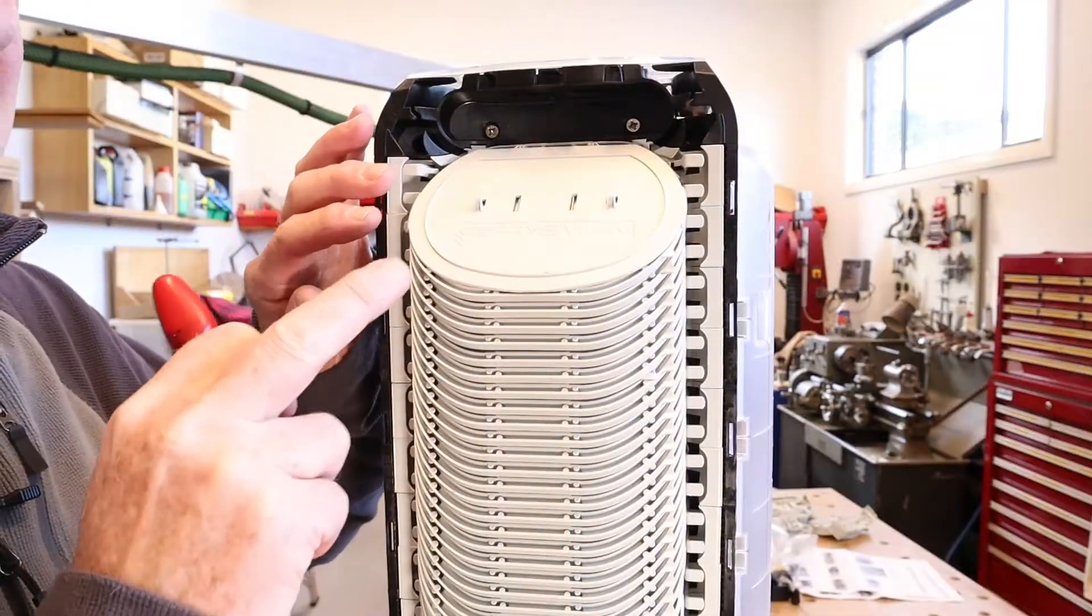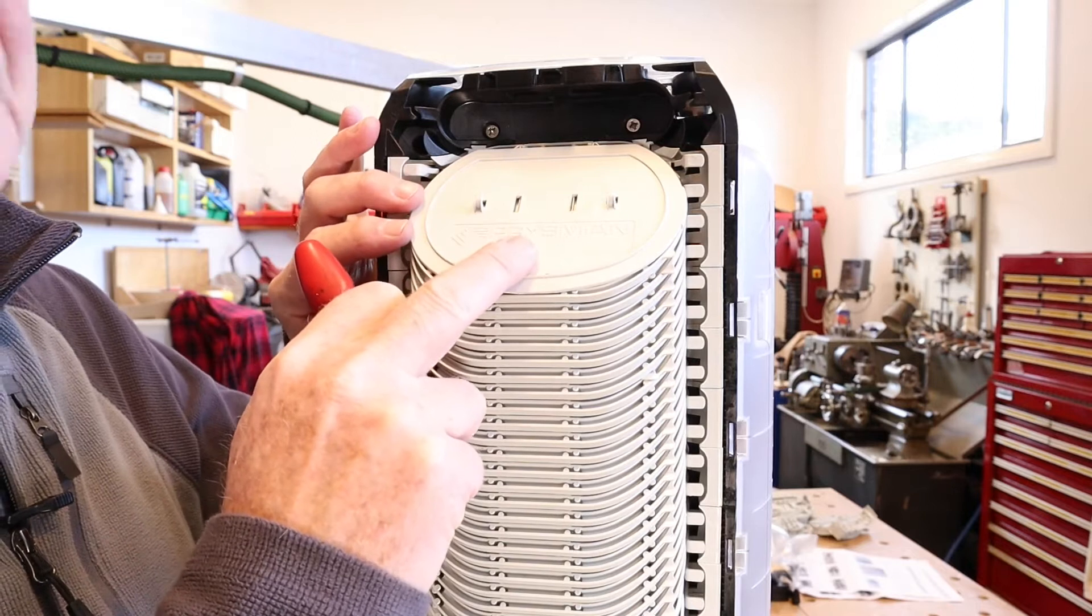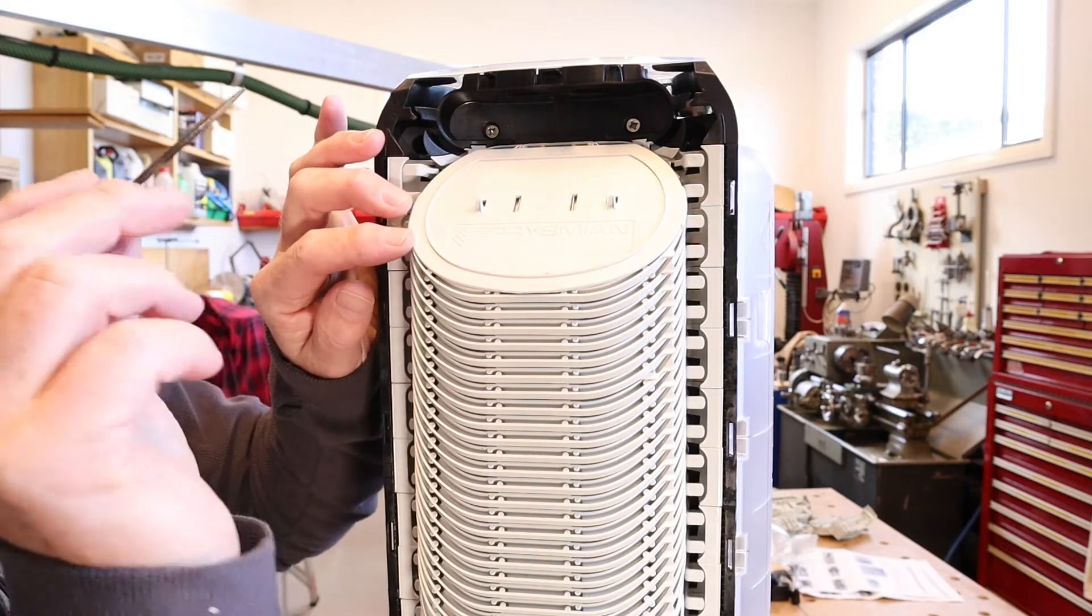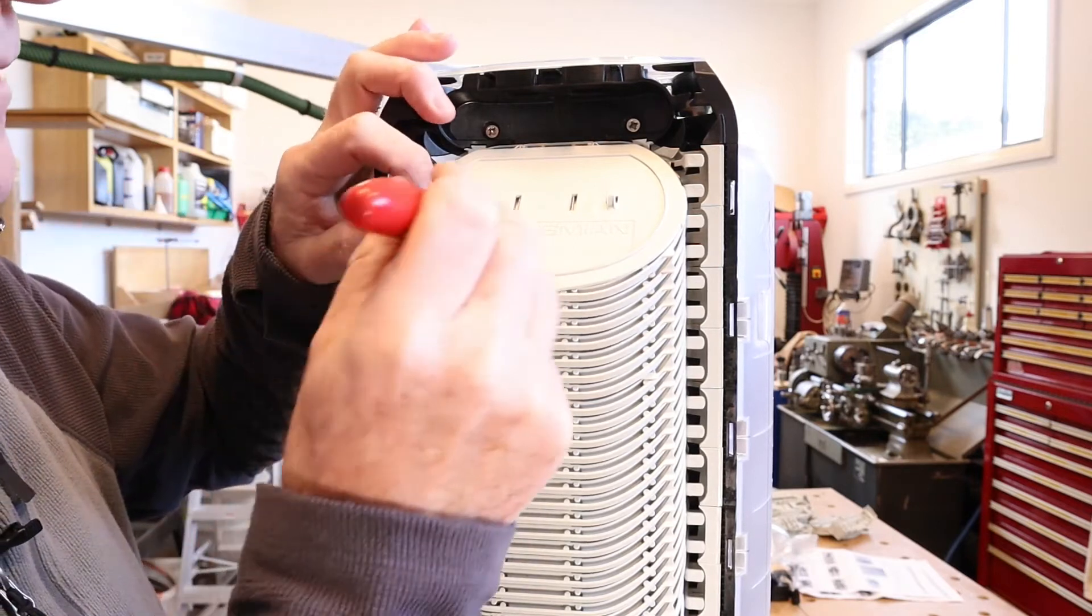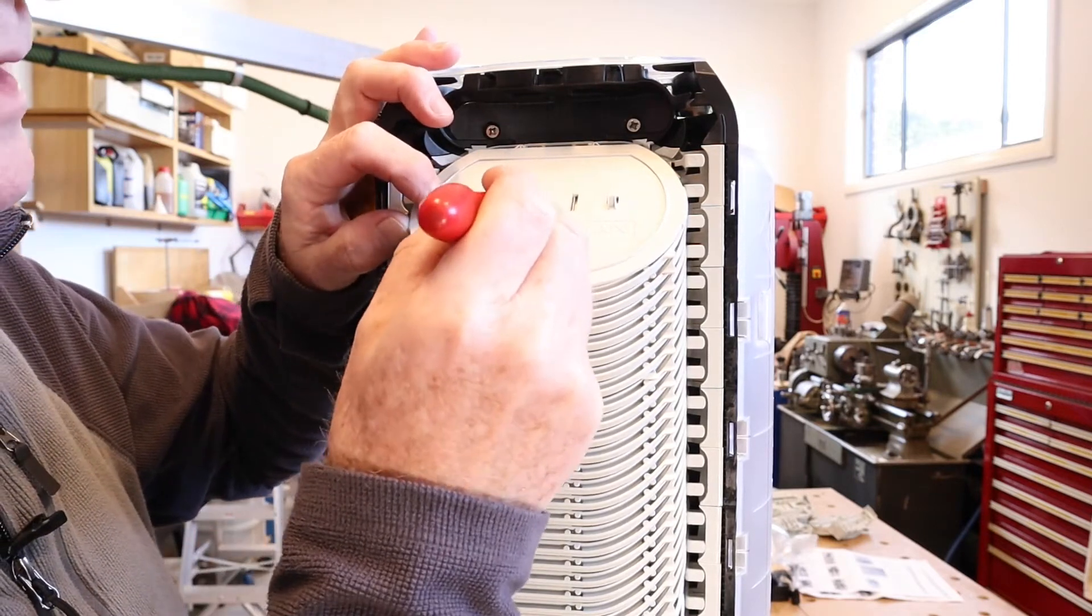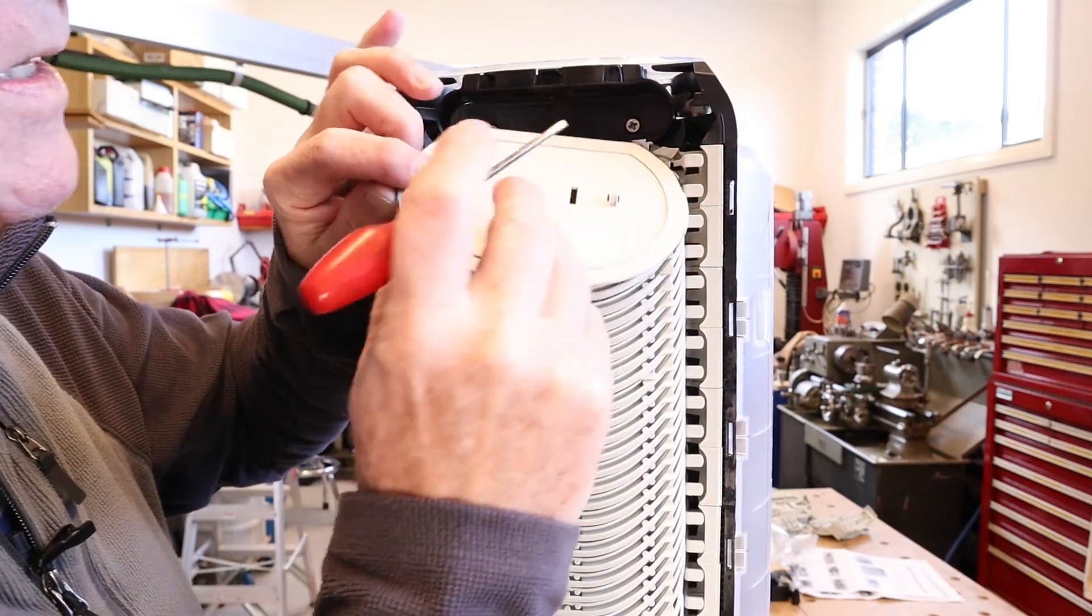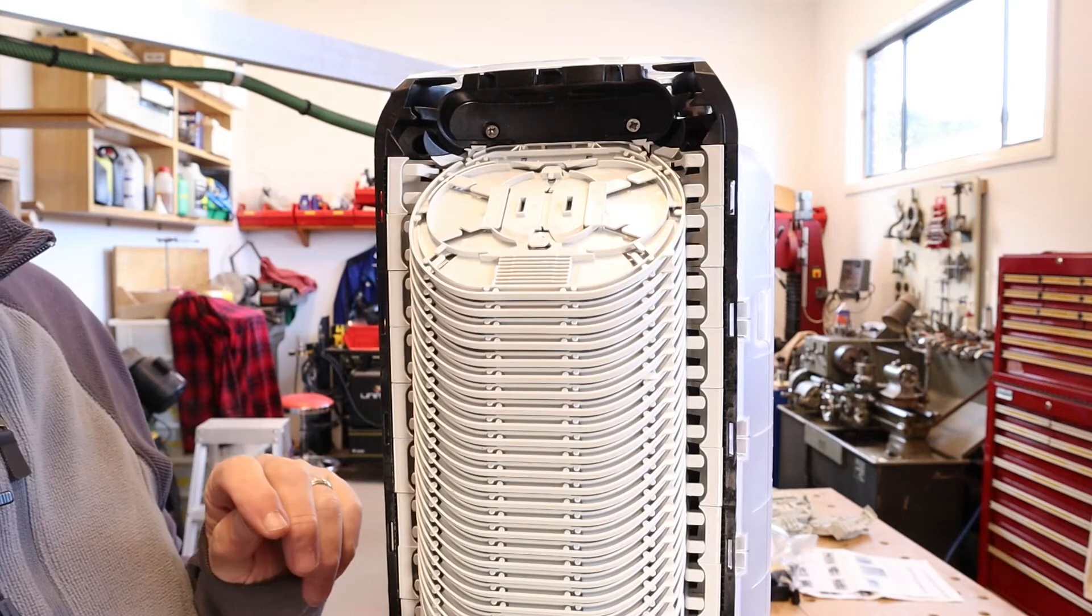So the first thing is that the top tray always comes with a cover on it and it's quite easy to remove, but what you need to do is just take something like a small screwdriver and just release the securing tabs in these slots here. There's one and there's the other and it just comes away very easily like that.